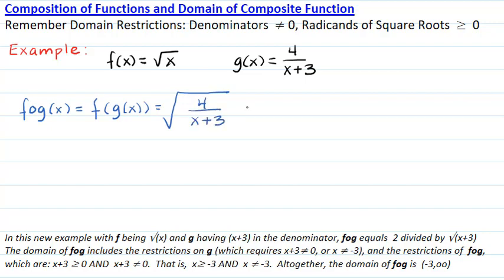Simplifying, the square root of 4 is 2 and the denominator becomes the square root of x plus 3, giving 2 over the square root of x plus 3. The domain of f circle g must include the restrictions of g of x. Since g of x has a denominator, the restriction is that the denominator must not equal 0, making x not equal to negative 3.